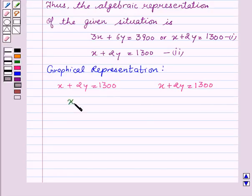So, if we take X and Y: if we take X equal to Rs. 1100, we get Y equal to Rs. 100. And, on taking X equal to Rs. 100, we get Y equal to Rs. 600.